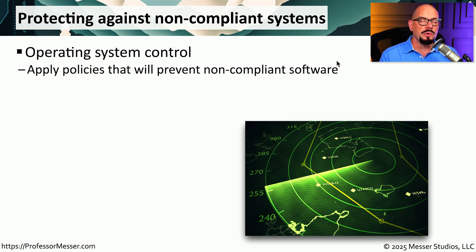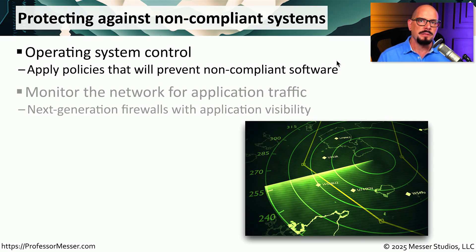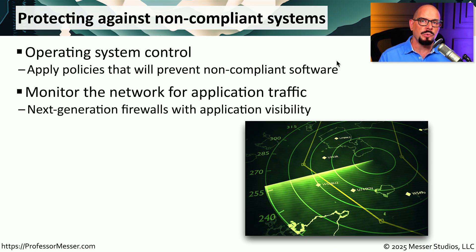For example, many organizations have an Active Directory infrastructure, and that allows them to set group policies to enable or disable aspects of the operating system. Many organizations will also implement next-generation firewalls so that they can see every bit of data that's traversing their network, and they know every application that's in use.